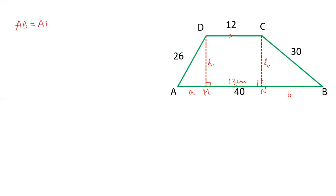AB is equal to AM plus MN plus BN. AB is given as 40, AM is A, MN is 12, BN is B. So the length of A plus B, that is the sum of A plus B, is 40 minus 12 is 28. We have A plus B is 28.